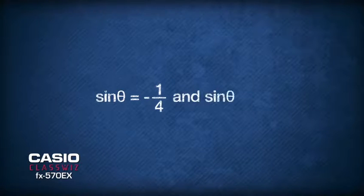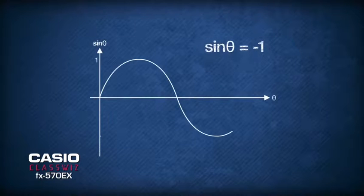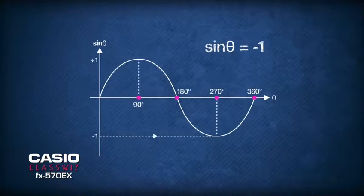So now, we have sinθ = -1/4 and sinθ = -1. To solve sinθ = -1, we can refer to the graph of sin and find that for angles within 0 to 360 degrees, the ratio of -1 corresponds to angle 270 degrees.